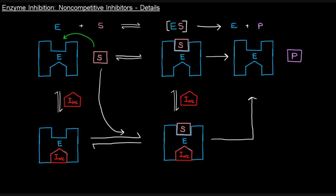That's because the non-competitive inhibitor binds at a site other than the active site. The substrate can bind to the free enzyme to form the enzyme-substrate complex. But that doesn't matter when it comes to the non-competitive inhibitor — because it binds at that other site, as long as that site's open and there's nothing impeding it, it can bind the free enzyme to form the enzyme-inhibitor complex, or it can bind the enzyme-substrate complex to give the enzyme-substrate-inhibitor complex, which cannot proceed towards enzyme and product, even though the substrate is bound there.